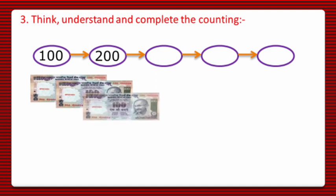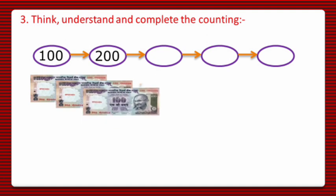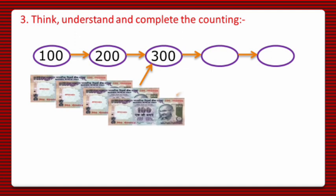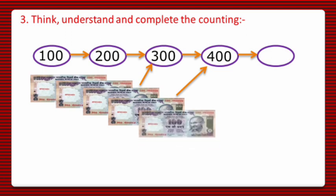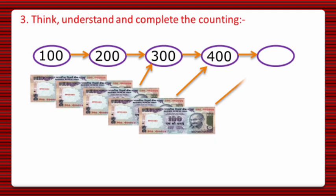If we take 1 more 100 rupee note, for 3 notes, the value will become 300, and if 4 notes are there, then the value becomes 400. So we will write down 400. And if 5 notes are there, the value will become 500. So we have completed the counting.